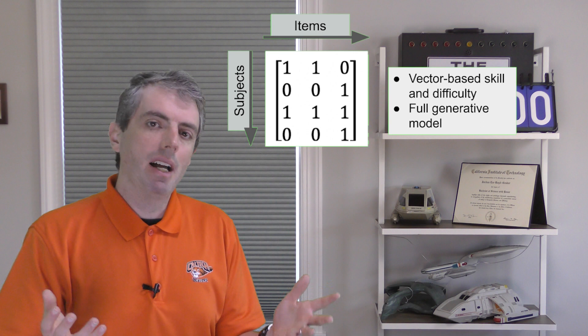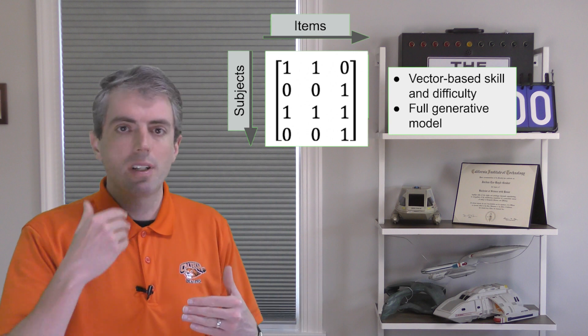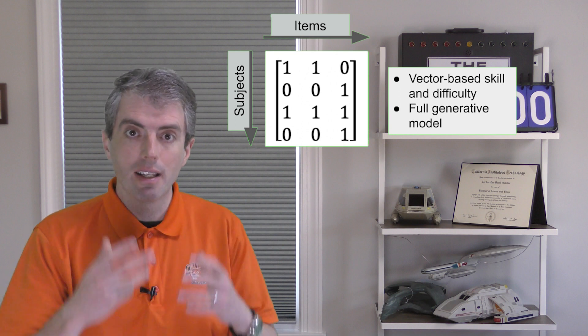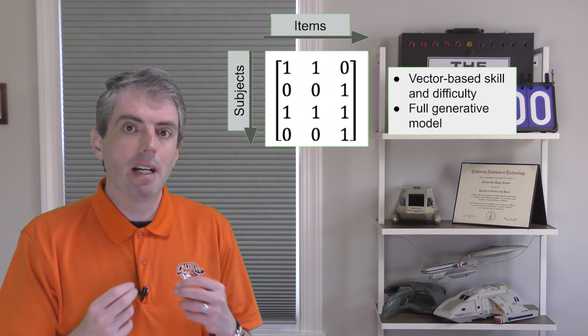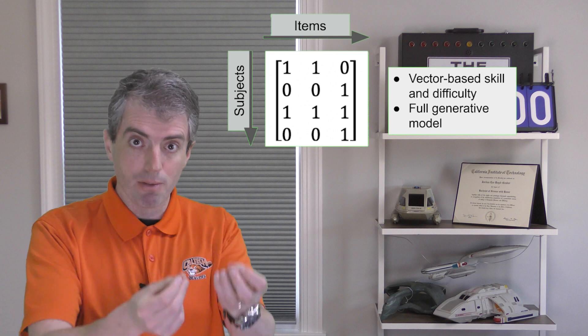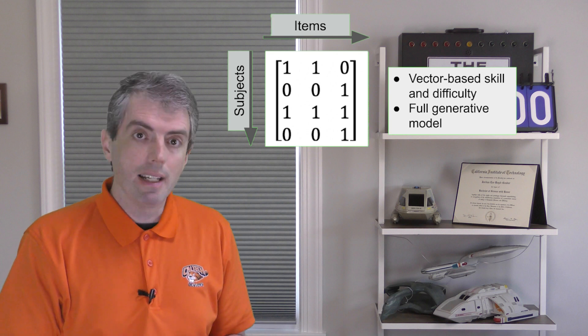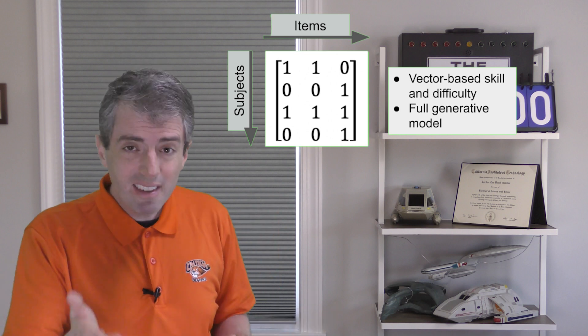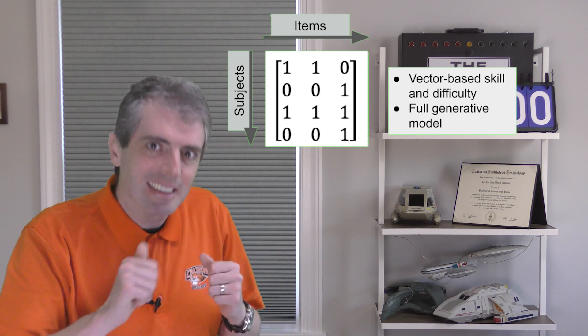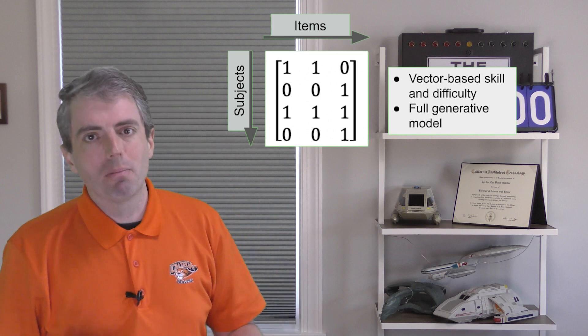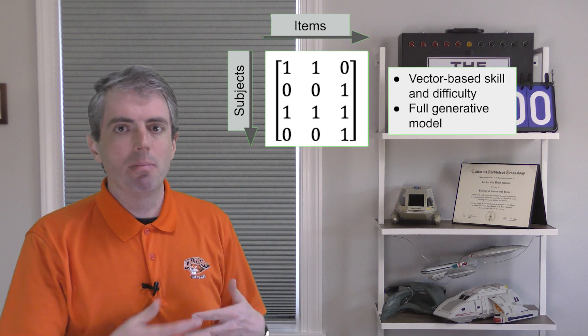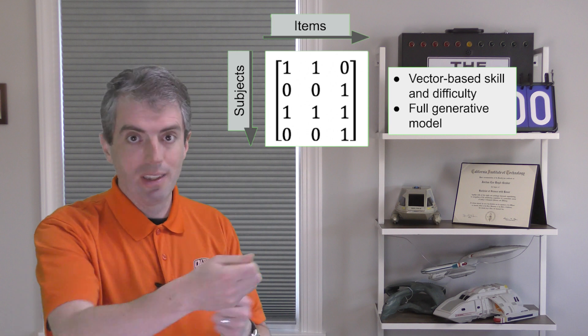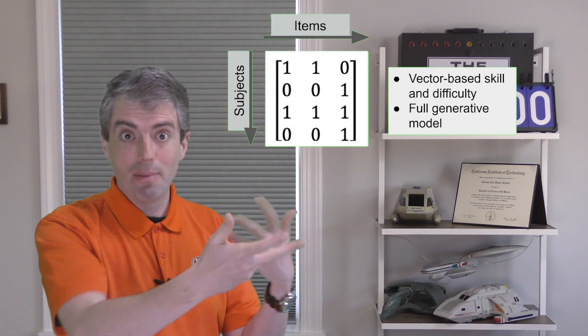The other detail is how to fit the parameters. Again, the same kind of inference techniques that we use for topic models, logistic regression, and word vectors can be applied here. Given a set of responses, maximize the log probability of reproducing your training data. To do things like hypothesis testing, you need to go an extra step and add Gaussian priors over the difficulty and skill to make them random variables with a posterior distribution that you can then ask questions about its distribution.